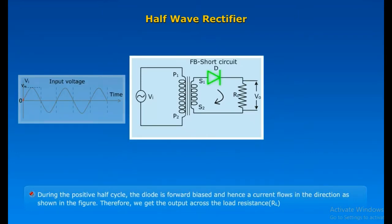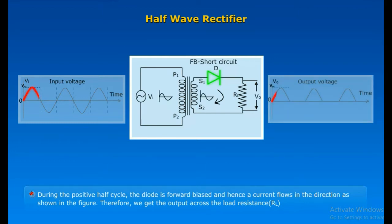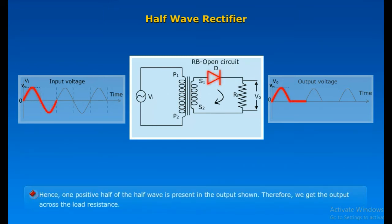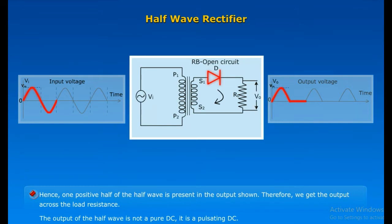During the positive half-cycle, the diode is forward biased and hence a current flows in the direction as shown in the figure. Therefore, we get the output across the load resistance RL — one positive half of the half-wave is present in the output. The output of the half-wave rectifier is not a pure DC; it is a pulsating DC.